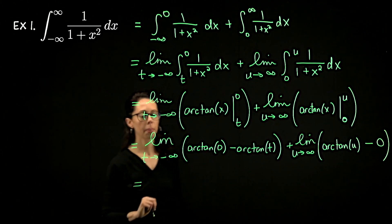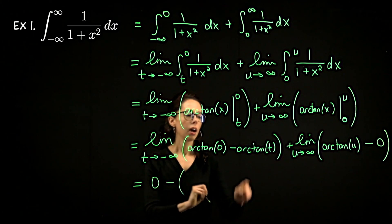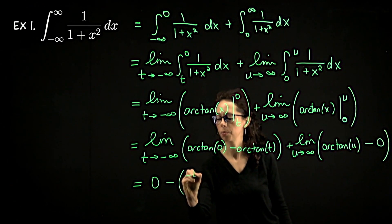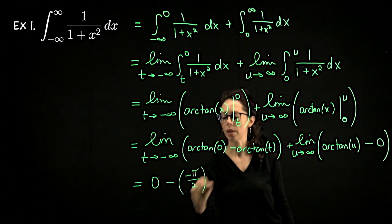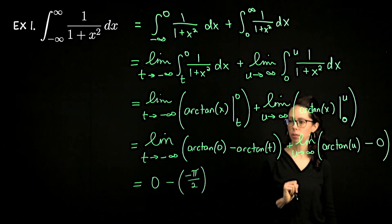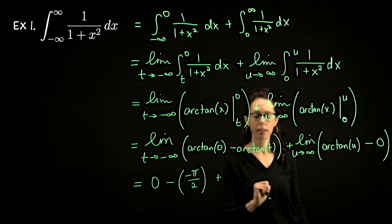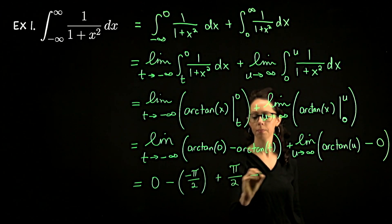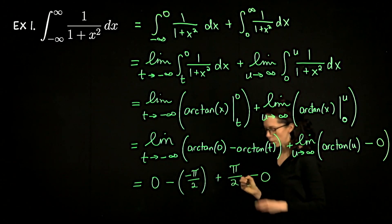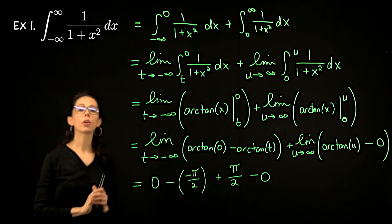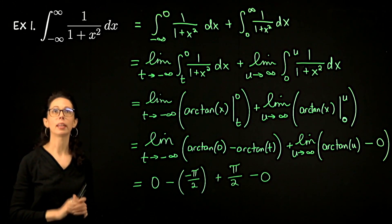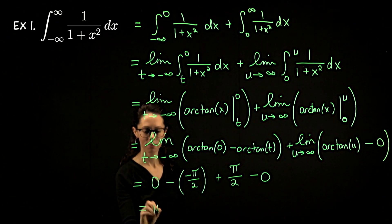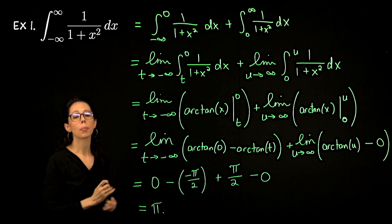In particular, arctan of zero is zero. Arctan of t as t goes to negative infinity is negative pi over two — it travels to the bottom horizontal asymptote as you travel left. Over here, it's going to be pi over two minus zero. So overall, the graph of this function encloses a finite amount of area between its graph and the x-axis, and that area is actually pi. This improper integral converges.